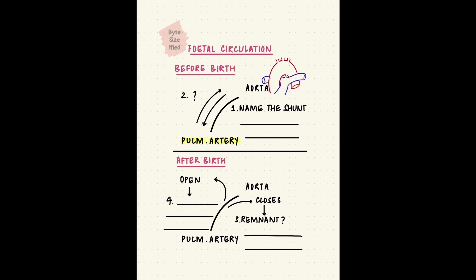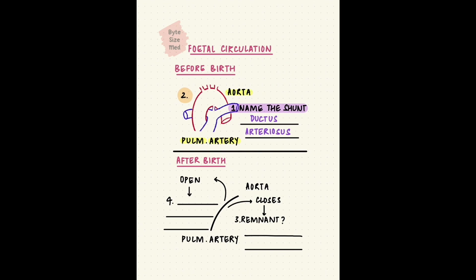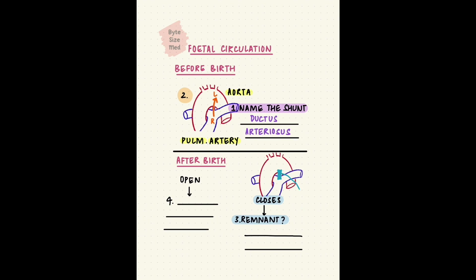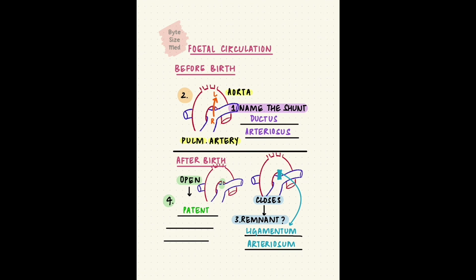This is a duct between two big vessels — the ductus arteriosus — which during fetal life shunts blood from the pulmonary artery to the aorta, that's right to left, bypassing the lungs. After birth, it closes and its remnant is called the ligamentum arteriosum. It should close, but if it stays open — it's patent — and that condition is called patent ductus arteriosus.